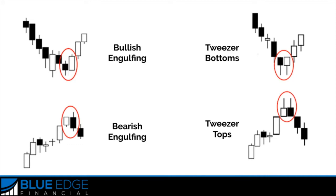With tweezer tops, you can see it's trending up — there are bullish candles and the first one is also a bullish candle moving up. The second candlestick is opposite the overall trend: with tweezer bottoms, when the price is moving down, the second candlestick would be bullish or moving up. With tweezer tops, since the overall trend is up, the second candlestick should be bearish or moving down. Another important thing: the shadows should be of equal length — tweezer tops should have the same highs while tweezer bottoms should have the same lows.